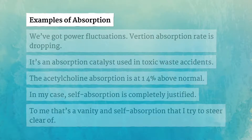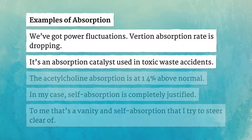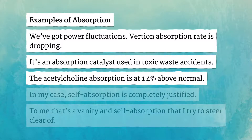Examples of absorption: we've got power fluctuations; absorption rate is dropping; it's an absorption catalyst used in toxic waste accidents; the acetylcholine absorption is at 1-4% above normal.